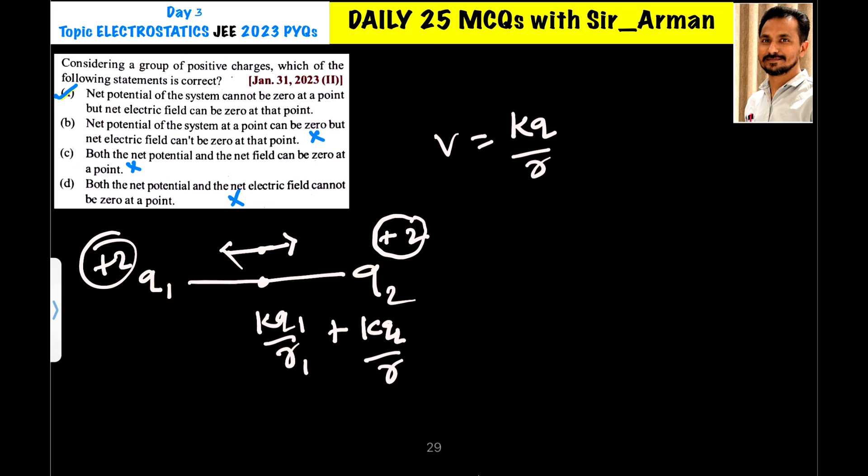So, net electric field can be zero, but net electric potential can never be zero. So, first is the correct. Now, net potential of the system at a point be zero. Can be zero. So, that is wrong.